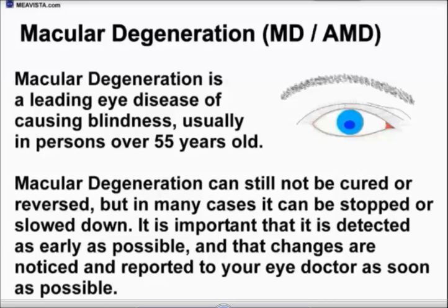Macular degeneration is a leading eye disease causing blindness in older adults. The disease can still not be cured or reversed, but in many cases it can be stopped or slowed down. It is important that macular degeneration is detected as early as possible, and that changes are noticed and reported to your eye doctor as soon as possible.